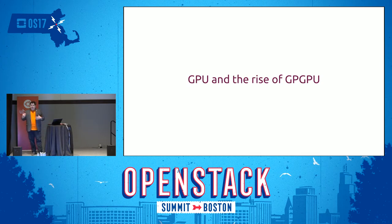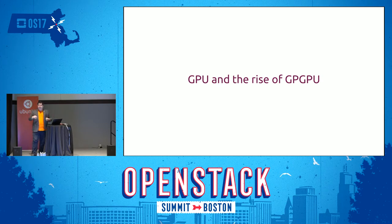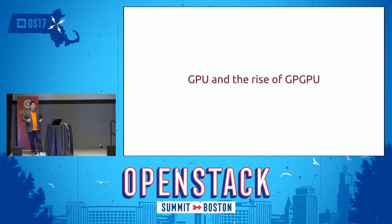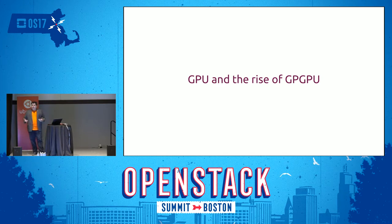I want to focus on GPUs. Everyone understands CPUs — they do the logical calculations for tasks like processing web server traffic or database record lookups. But GPUs are becoming a hot topic: why they came from graphics, why people are using them in general computing. We're seeing the rise of the general-purpose GPU — something more than just a graphics processor that allows computation cycles in a much different fashion at a much higher rate.